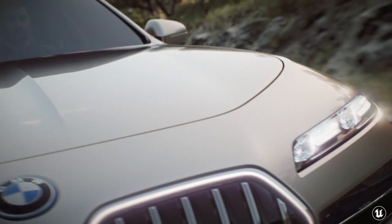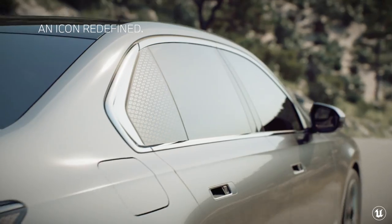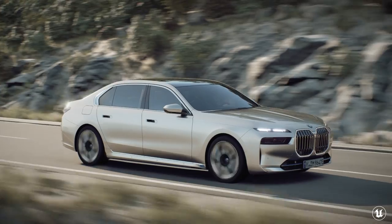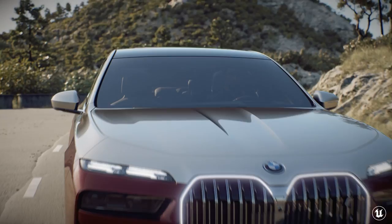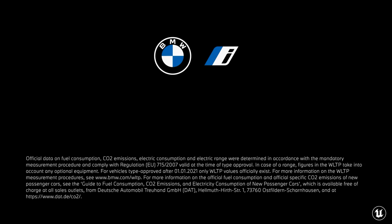That was our first product substance film, produced in February this year and made public on April 20th when we launched the new 7 Series. That film featured elements of the exterior of the car, and we simultaneously produced another one featuring the interior — so you'll see the theater screen in action in the product substance film.